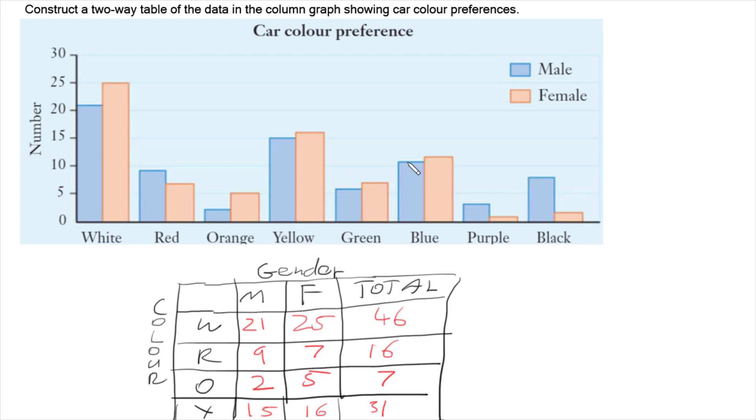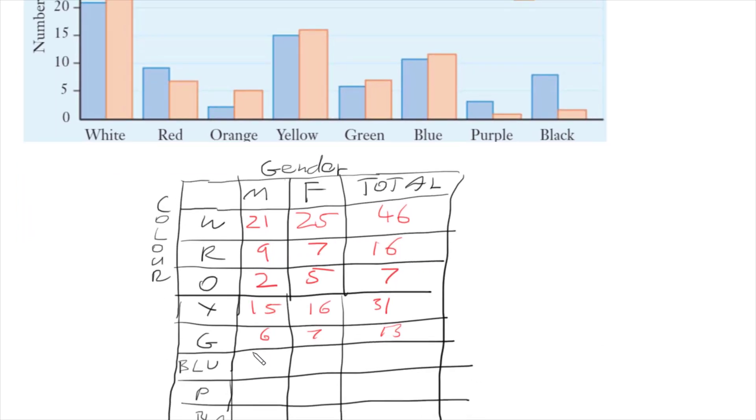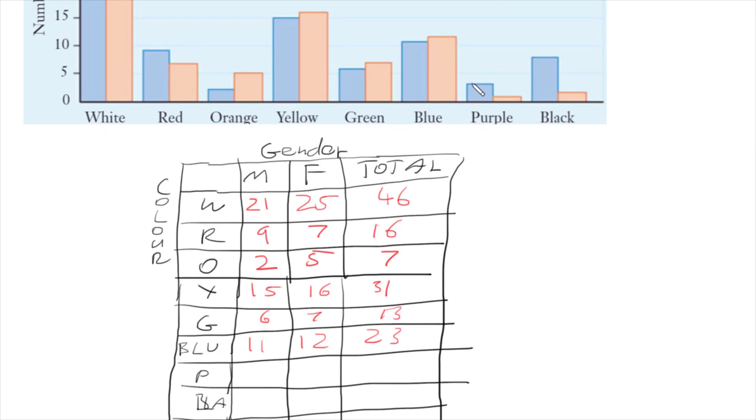Blue we've got 11 and 12. So for blue we've got 11 and 12, which is 23. Purple we've got 3 and 1, so total of 4. And black.